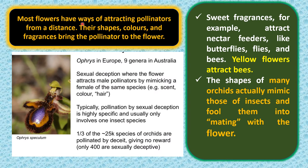Most flowers attract pollinators from a distance through their shapes, colors, and fragrances. Some orchids offer a speculum that exactly mimics a female bee species — sexual deception where the flower attracts male pollinators by mimicking the scent, color, and hair of a female. Typically, pollination by sexual deception is highly specific, involving only one insect species. There are about 25,000 species of orchids, of which only one-third are pollinated without giving reward, only 400 are sexually deceptive. Different butterflies, flies, and bees are attracted by sweet-fragrant flowers, and yellow flowers attract bees.